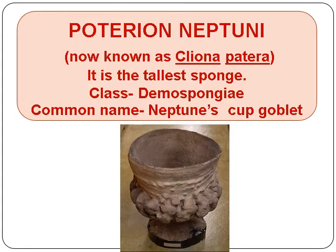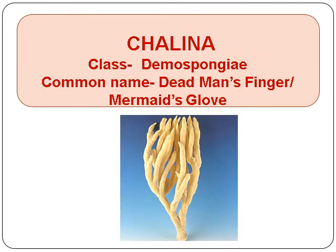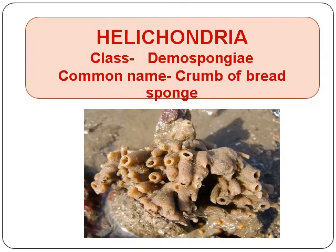Poterion neptunei, now known as Cliona patera — it is the tallest sponge. It belongs to Class Demospongiae. Common Name: Neptune's Cup or Goblet. It is given this name due to its appearance. Cliona. Class Demospongiae. Common Name: Dead Man's Finger or Mermaid's Glove — named due to its appearance. Halichondria. Class Demospongiae. Common Name: Crumb of Bread Sponge.